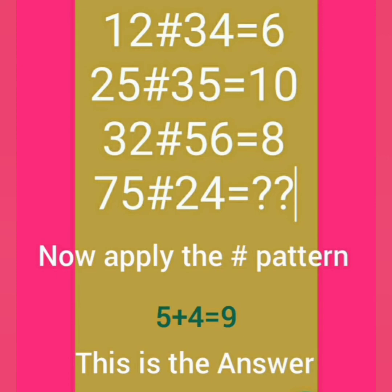Now we can easily find the solution for 75 ash 24. Applying the ash pattern — mod 10 — for 75 the remainder is 5, and mod 10 for 24 the remainder is 4. So the answer is 5 plus 4 equals 9.